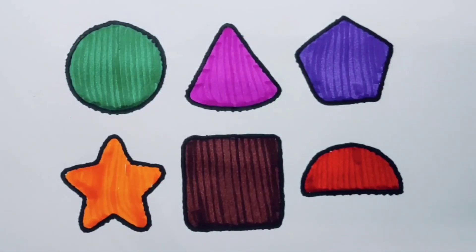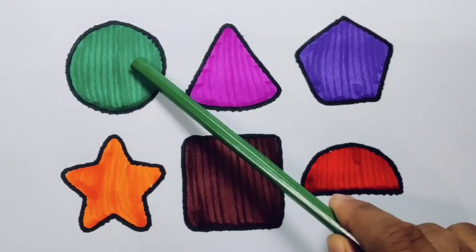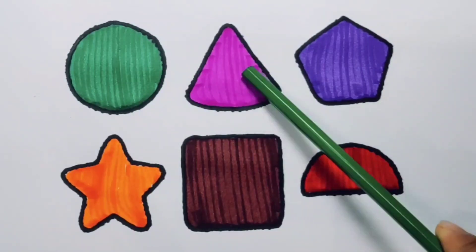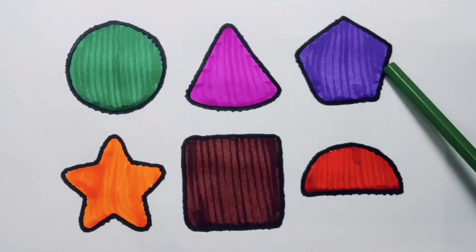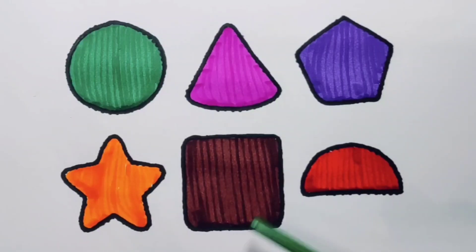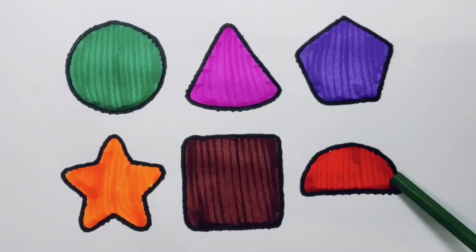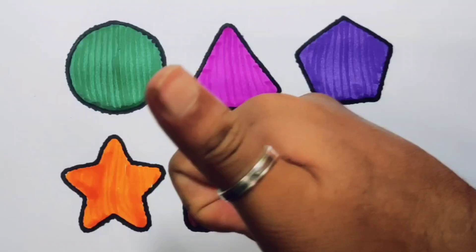What did we learn? We learned green color circle, pink color triangle, purple color pentagon, orange color star, chocolate color square, red color semicircle. Thank you for watching.